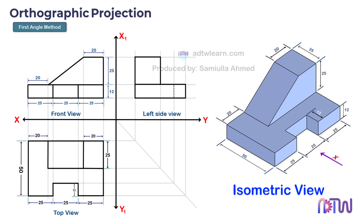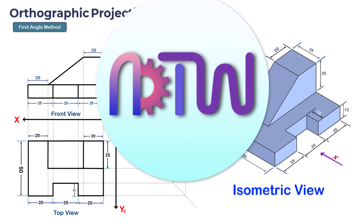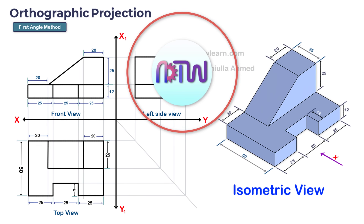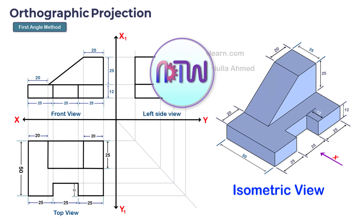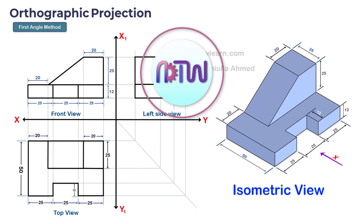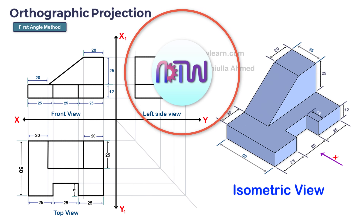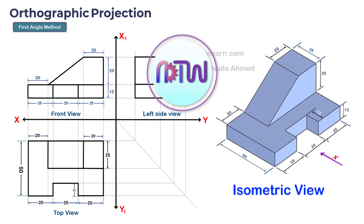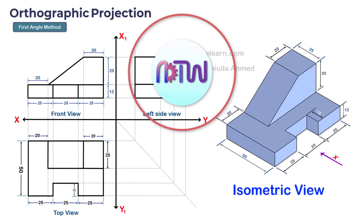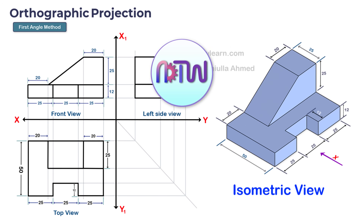This is how we can draw an orthographic view from an isometric view. I hope this video helped you in understanding how to draw an orthographic projection of an object. If you like the video, click on the like button, and if you are new to my channel ADTW You Learn, click on the subscribe button and turn on notifications to get all my latest videos.